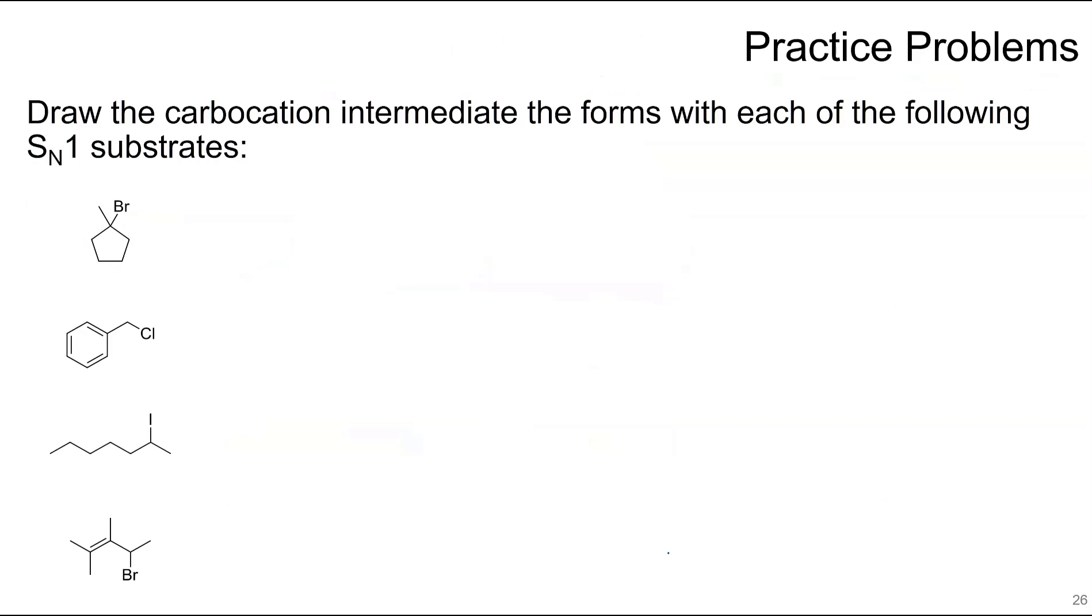For these practice problems, draw the carbocation intermediate that forms with each of the following SN1 substrates. The first arrow for all of these is loss of the leaving group. So the electrons between the halogen and the carbon will go on to there. So that one is a tertiary carbocation.